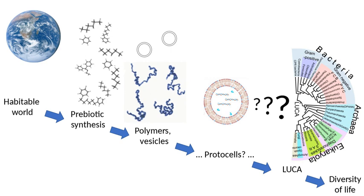Oceans and continental crust existed within 150 million years of Earth's formation, appearing first in the Hadean Eon. Despite this, the Hadean environment was one highly hazardous to life. Frequent collisions with large objects up to 500 kilometers or 310 miles in diameter would have been sufficient to vaporize the ocean within a few months of impact, with hot steam mixed with rock vapor leading to high-altitude clouds completely covering the planet.